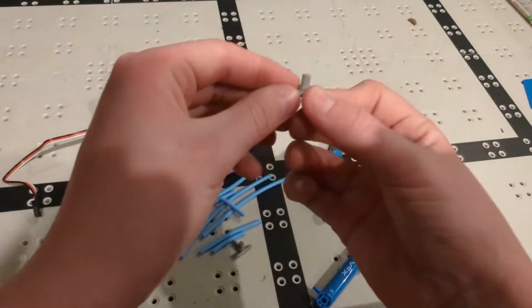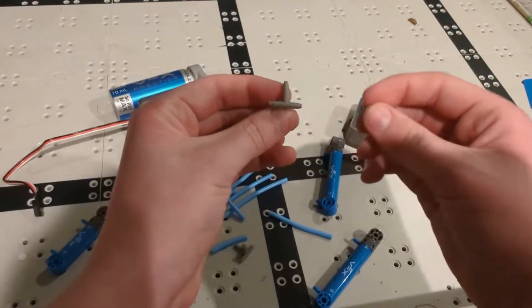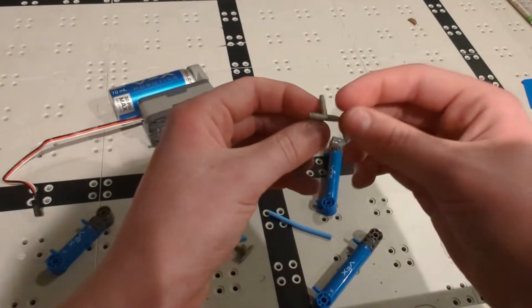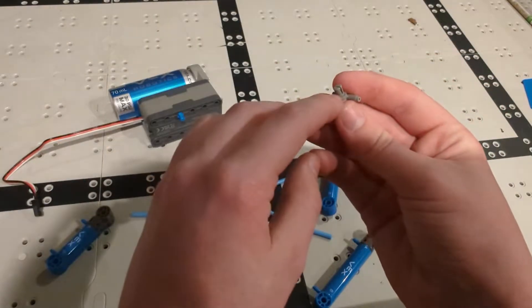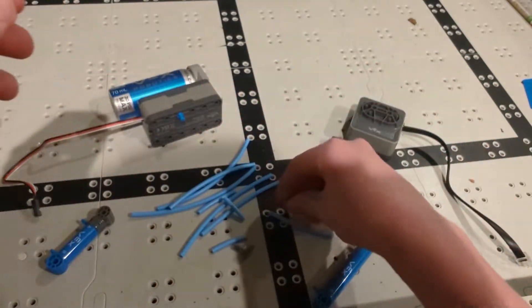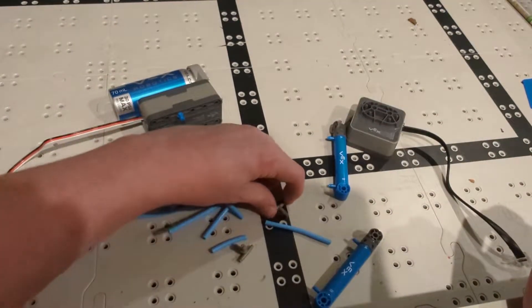So these right here are little tubing connector pieces. They allow you to stick a bunch of tubing together so that you can hook it all up. As you can see, they have this little pin right here, so you can actually stick it down onto your builds so that way they're secured.